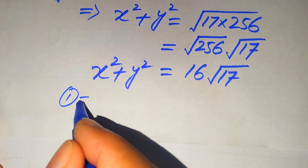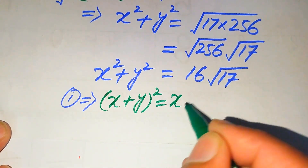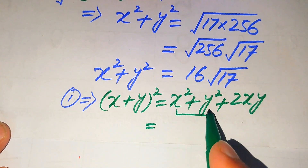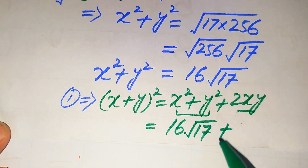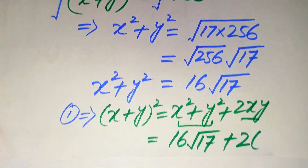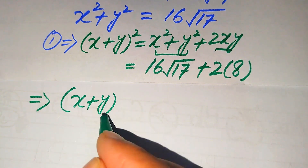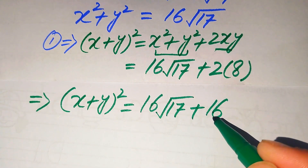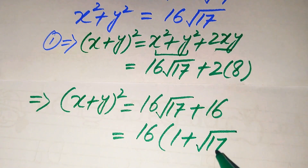Now using equation number one: (x + y)² = x² + y² + 2xy. We substitute x² + y² = 16√17 and xy = 8: (x + y)² = 16√17 + 2·8 = 16√17 + 16. Both terms involve 16, so we factor it out: (x + y)² = 16(1 + √17).